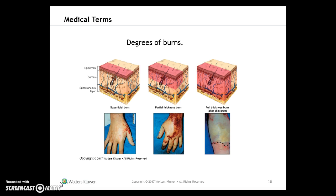Here are the degrees of burns. A superficial burn involves only the epidermis — it causes redness and swelling but no blisters. This is most commonly seen with sunburn and is called a first-degree burn. A partial thickness burn involves both the epidermis and the dermis, usually produces blisters, and is commonly called a second-degree burn.